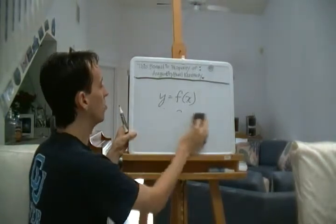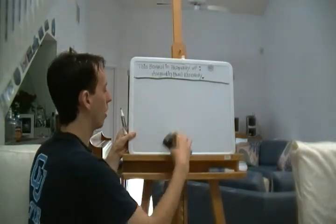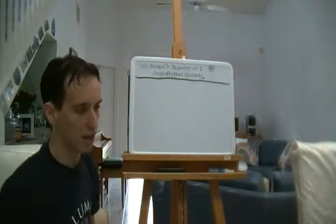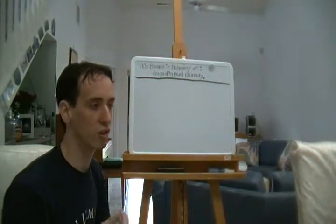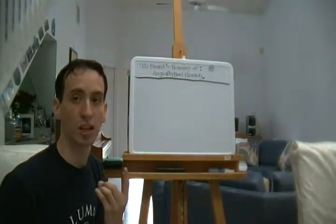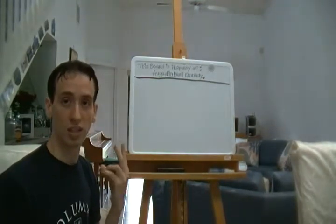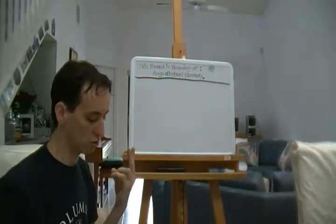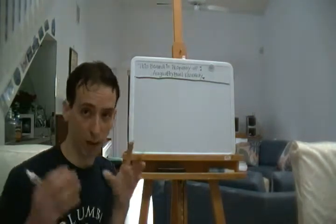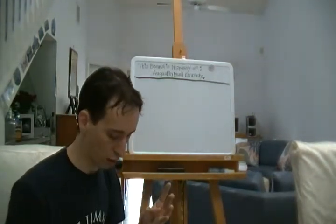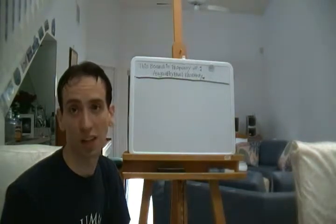What we're going to do now is look at four different ways that you can represent a function. The first is verbally. The second is numerically, through a table of values. The third is visually, by a graph. And the fourth is algebraically, by an explicit formula.